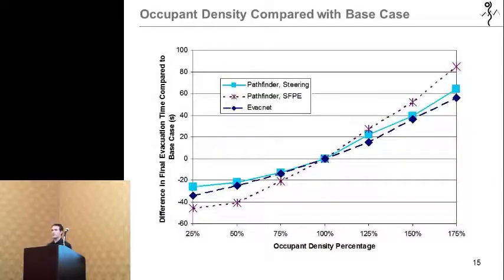Here you see a comparison for the different occupant densities. These are compared to the base case time, where you see that 100%, there's a zero-second difference. These numbers for Pathfinder are generally within five seconds of each other. However, they appear to have less of a difference for Pathfinder in steering mode because of the low base case results. Pathfinder at a high density is seen to have more of an impact, which could be the result of the door flow limitations, while EvacNet also has door flow limitations. It could be less impacted because of the occupant redistribution.